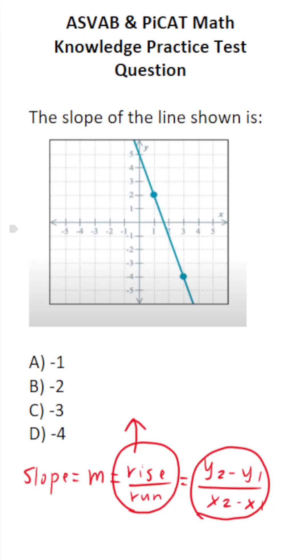Since the graph decreases as we move from left to right, we know our slope is going to be negative. All the answer choices are negative, so that really doesn't help us.